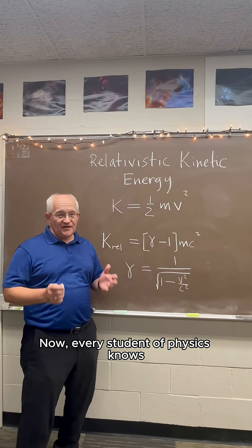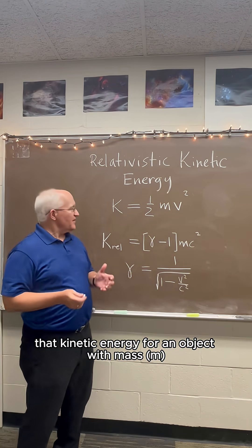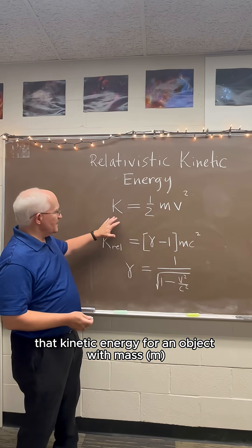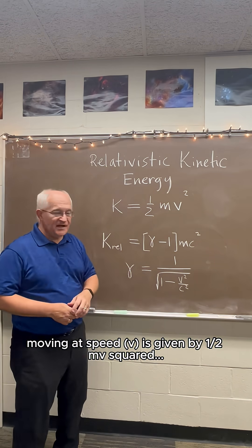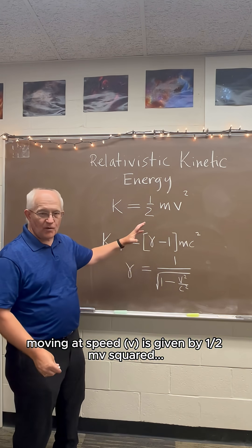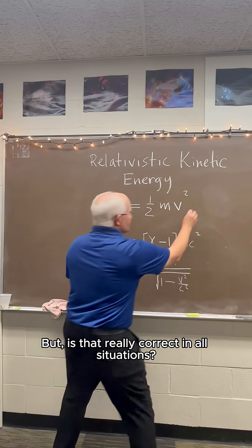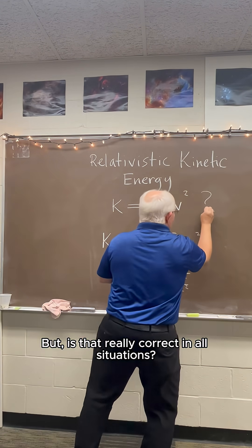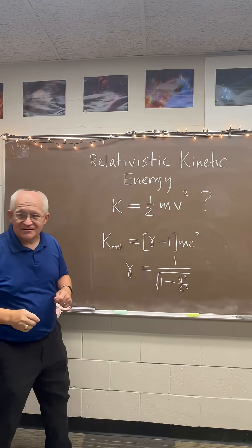Every student of physics knows that kinetic energy for an object with mass m moving at speed v is given by one-half mv squared. But is that really correct in all situations?